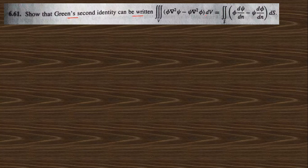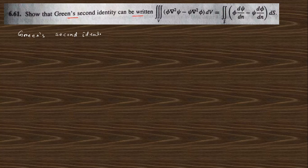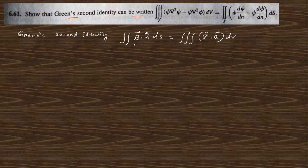Let us start with question 6.61, which asks us to show that Green's second identity can be written in a specific form. Green's second identity is given in the book. It is written as the surface integral of B dot n-cap dS equals the volume integral of divergence of B dV. Comparing both sides, divergence of B equals phi grad-squared psi minus psi grad-squared phi.